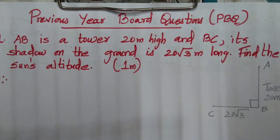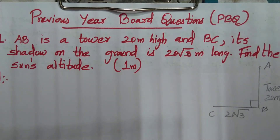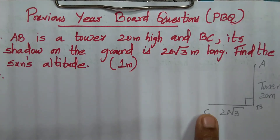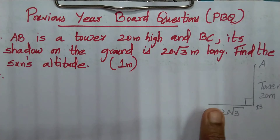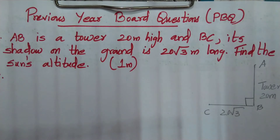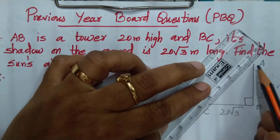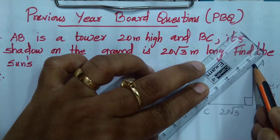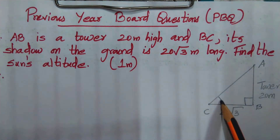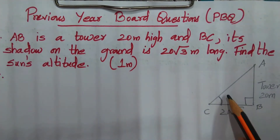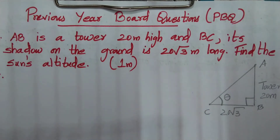The sun's altitude is the angle you can see from the tip of the shadow to the top of the tower. Sun's altitude and angle of elevation are related here. We mark the angle at the top of the shadow — let it be theta.